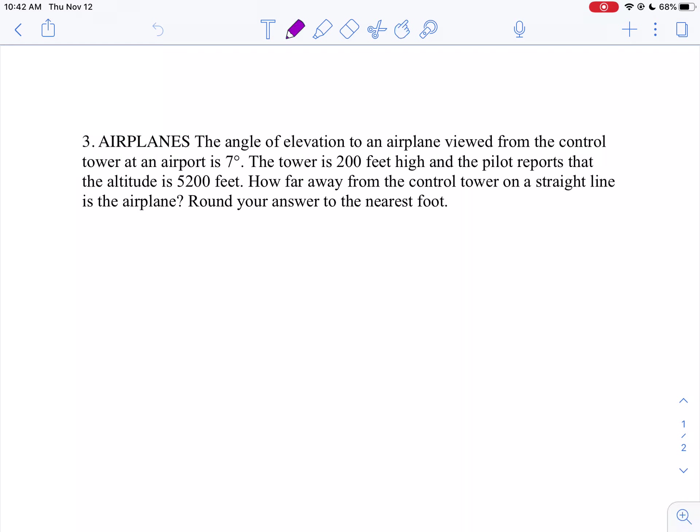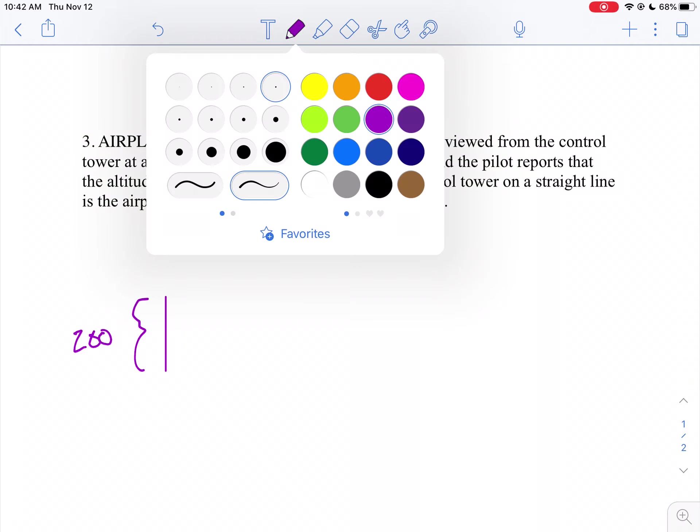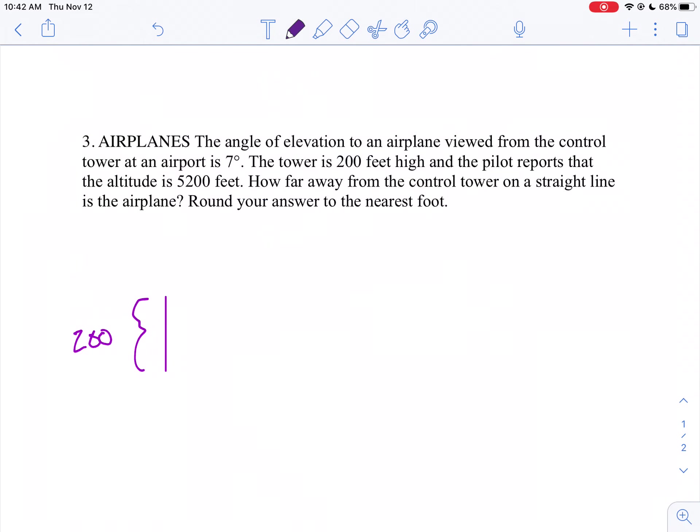So let's model this. Here's my control tower right here, and we know this is 200 feet above the ground. If you look up, I'm going to switch colors here so you can see the difference. If you look up, you're going to see the airplane up here, which I'll call letter A. And I'll put C for control tower.